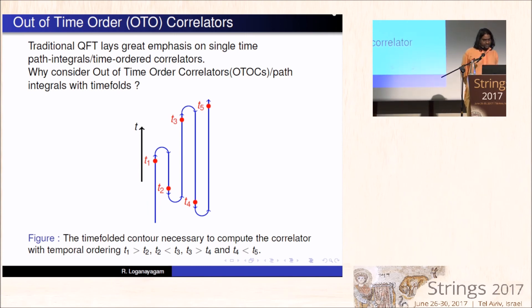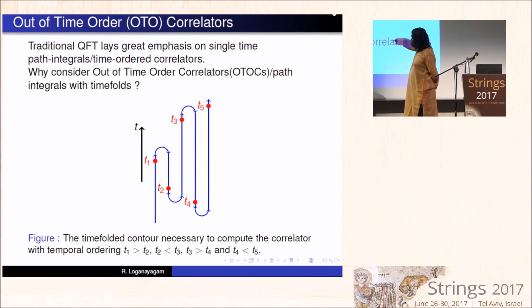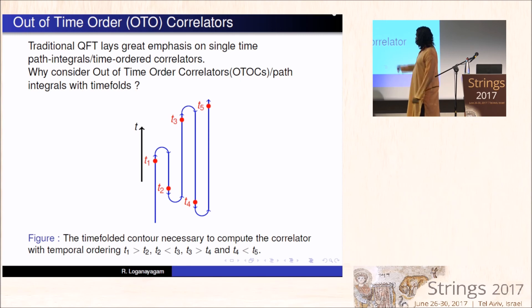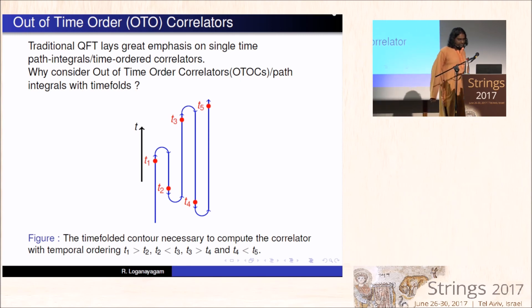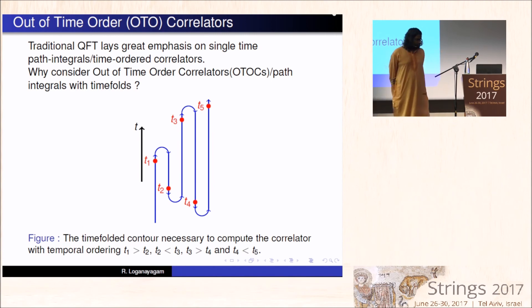Reading from left to right in Arabic style, the standard thing in quantum field theory is that your T5 will be closest to the bra, and then T1 will be closest to the ket, and then you order the operators accordingly. This is not a time-ordered correlator, and so it cannot be computed by the usual Feynman path integral.